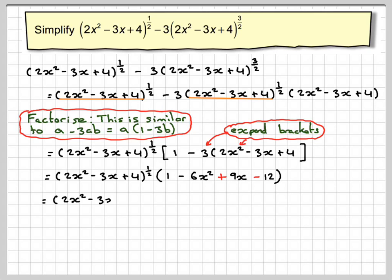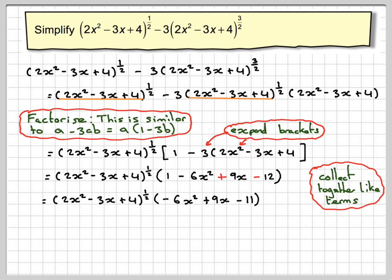Now what we do is collect together like terms. 1 minus 12 is -11. So collecting like terms, we get -6x² + 9x - 11.